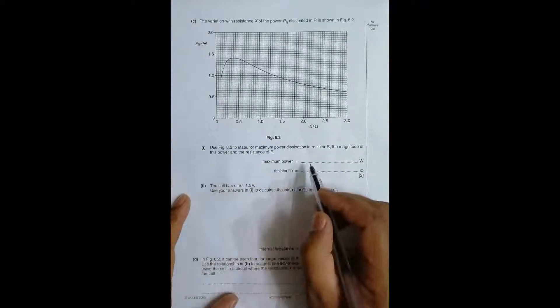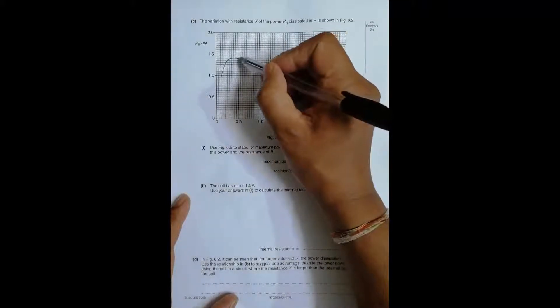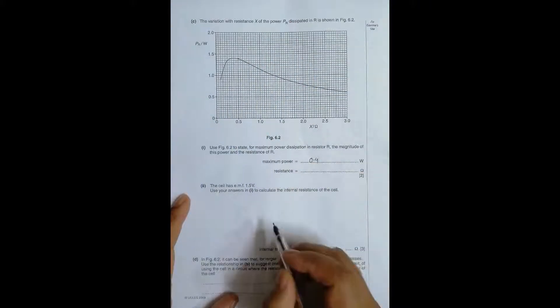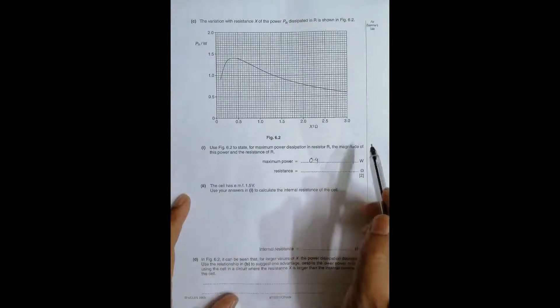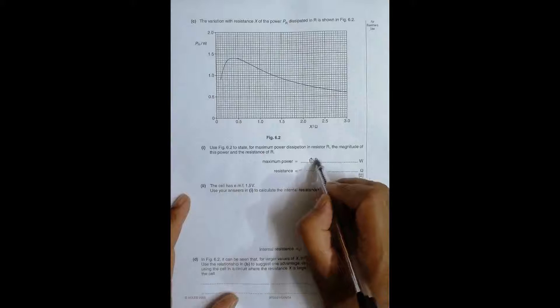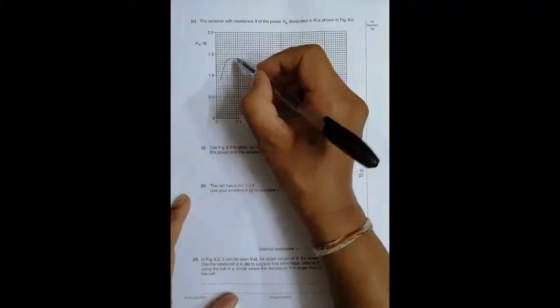Use figure 6.2 to state for maximum power dissipation in the resistor the magnitude of the power and the resistance. So the max power is 1.4 watt and the resistance at which it happens should be 0.4 ohm.